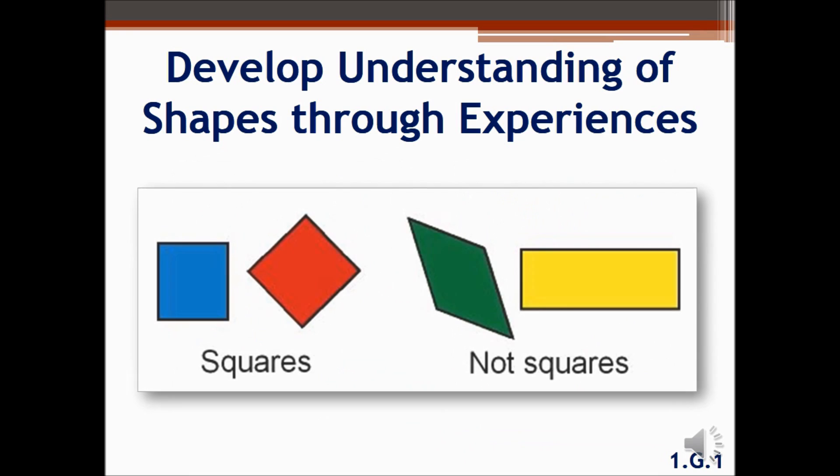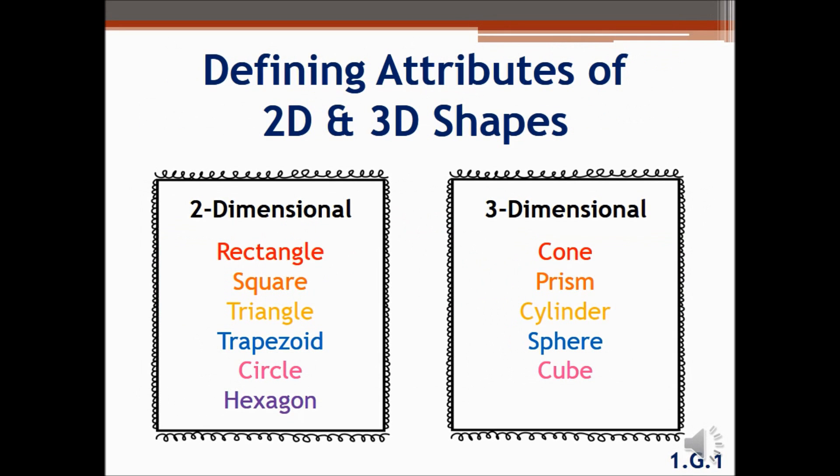Next, students will start to understand defining attributes, such as two pairs of equal sides, to identify a rectangle. In first grade, we look at the defining attributes of both 2D and 3D shapes. This screen shows all the shapes a first grader must see. Some of these shapes are a review from kindergarten, while others will be new to the students.